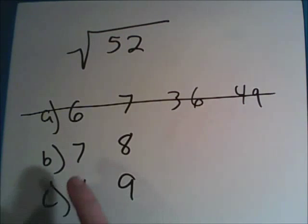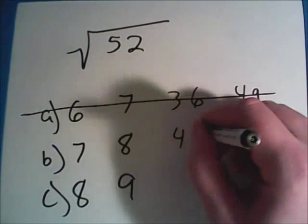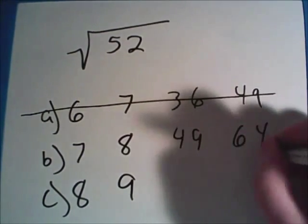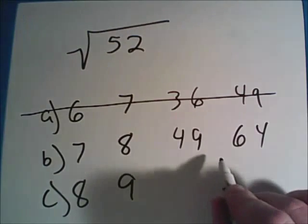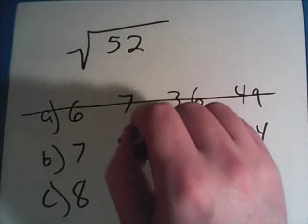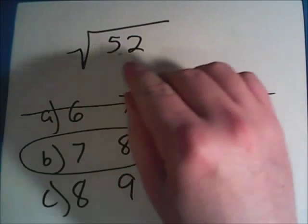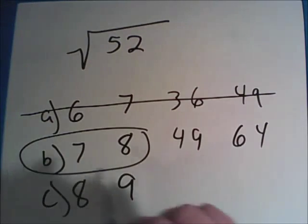What are the square roots of seven and eight? Those are 49 and 64. 52 does lie within this set of numbers, so your answer would be B. The square root of 52 lies somewhere between seven and eight.